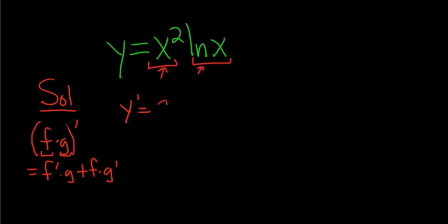So it's the derivative of the first, which is 2x, times the second, which is ln x, plus the first, which is x squared, times the derivative of the second. The derivative of the natural log is 1 over x.